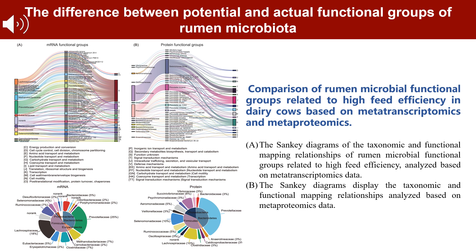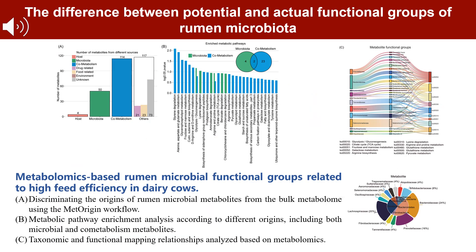The Sankey diagram illustrates the mapping of functional microbe taxonomy classifications based on mRNA and proteins. Results showed high redundancy at the functional level of Rumen microbial communities, whether based on potential mRNA or actual protein functional groups. We categorized our Rumen MTB dataset into four groups: microbial metabolites, host-specific metabolites, microbial-host co-metabolites, and others. From 29 identified functions related to microbiota and co-metabolism pathways, we visualized relationships using a Sankey network.